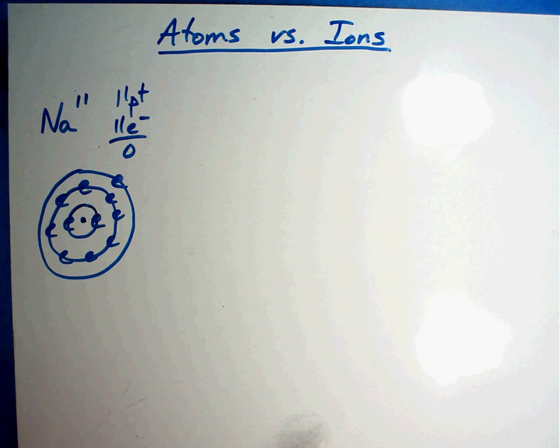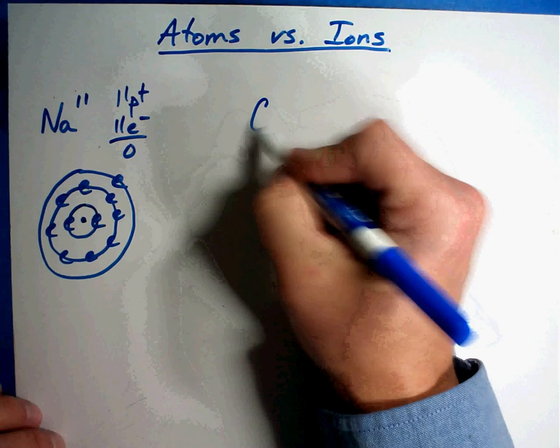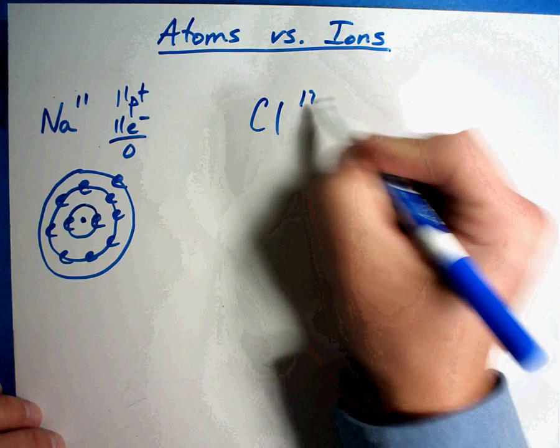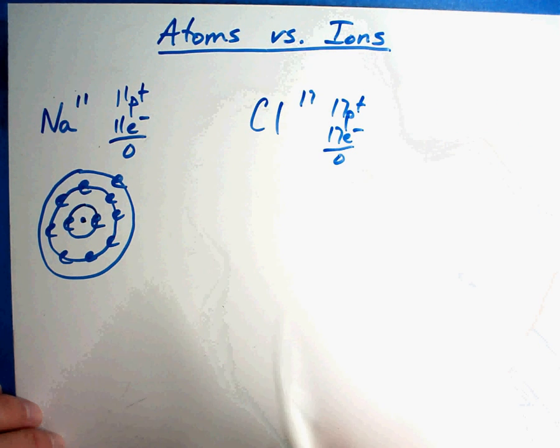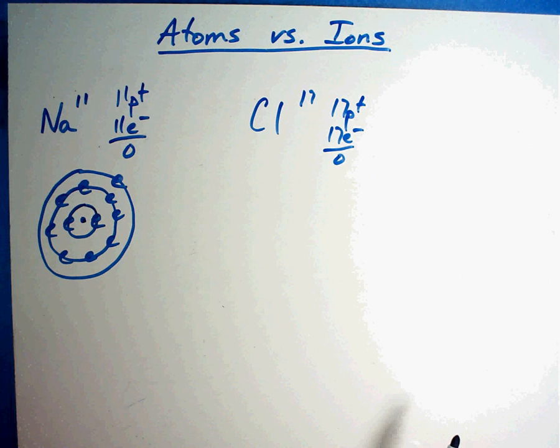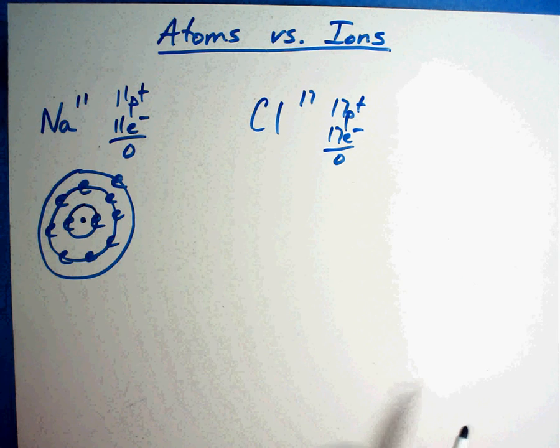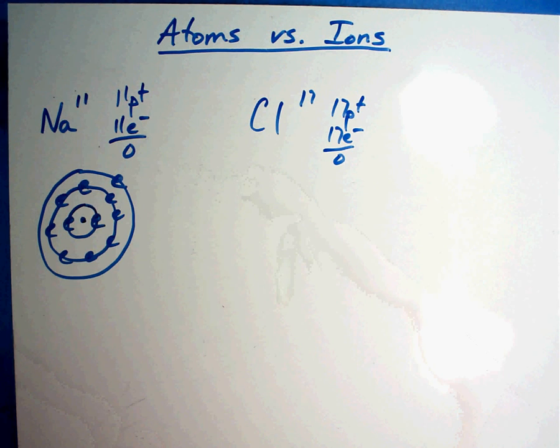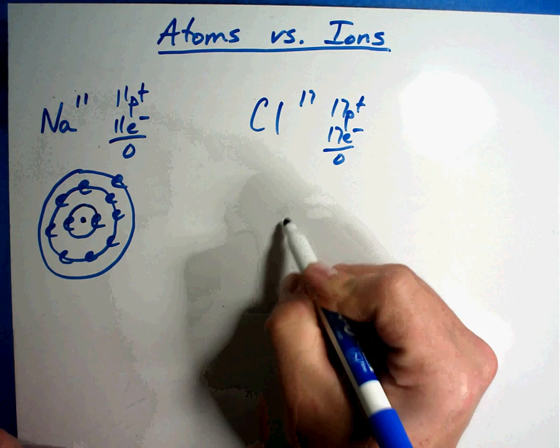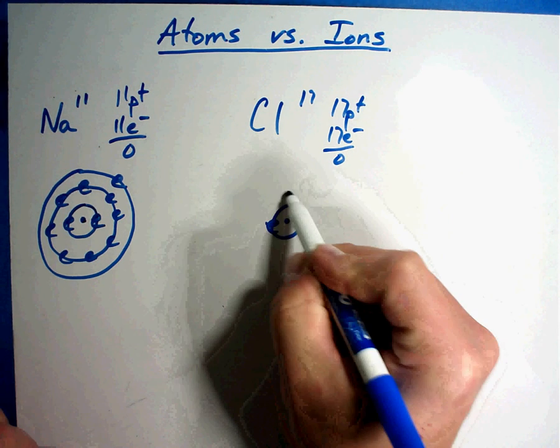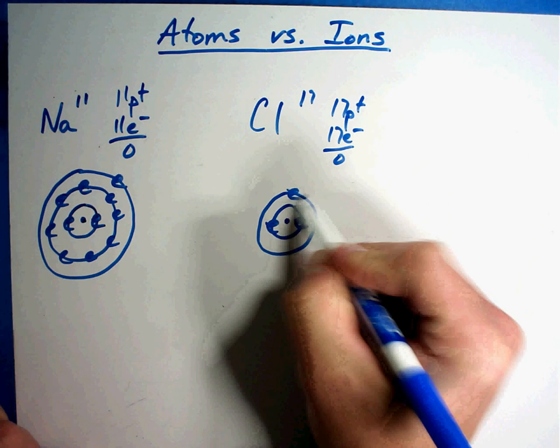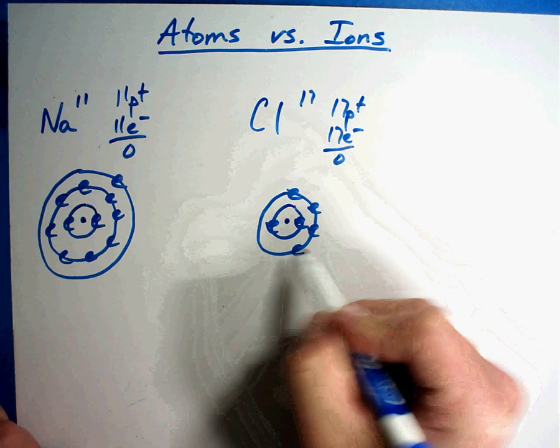Now I'm going to compare this to another element, chlorine, element 17. 17 protons, 17 electrons, neutral. Now you may wonder, why does he keep doing the math? It's going to be very important here in just a second. Completely different elements. This is a review.